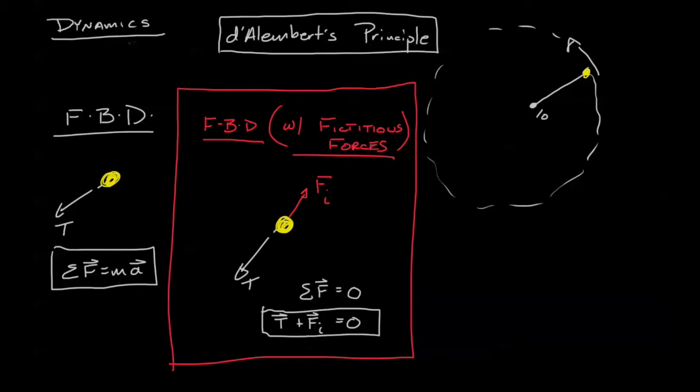So in summary, this modified approach really just has two components to it. First, you draw your free body diagram with inertial forces or with fictitious forces. Secondly, you sum all the forces to zero.